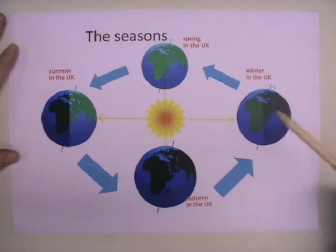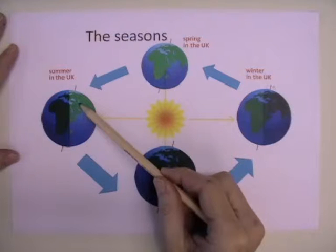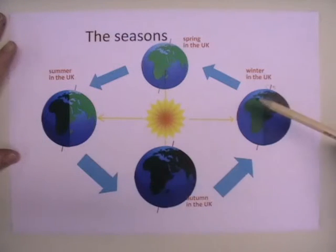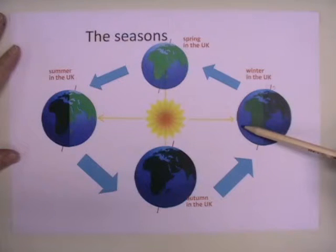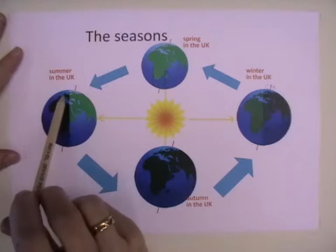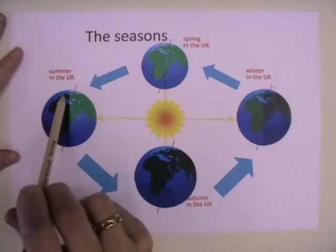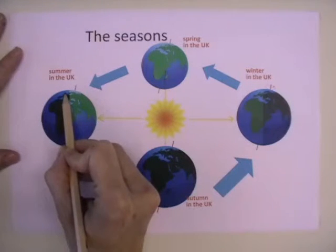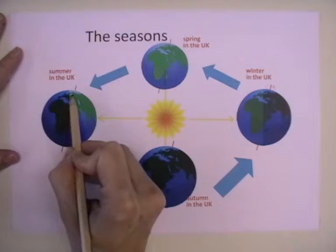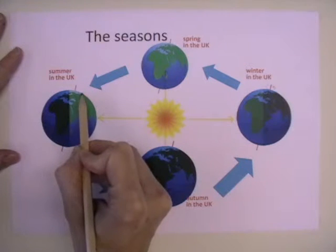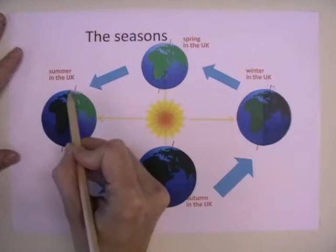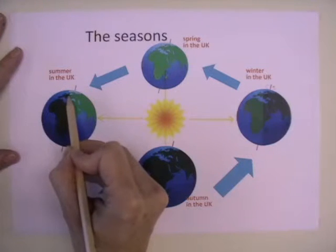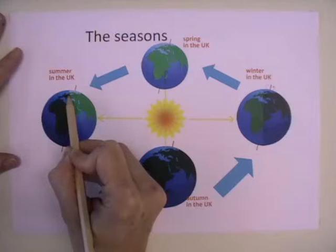So when we have summertime, the southern hemisphere has winter. When we have wintertime, the southern hemisphere has summer. Given that we are positioned over here, when we rotate into the sun's light, we actually spend far longer in the sun's light all the way around, and far shorter in the darkness during our summertime.